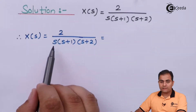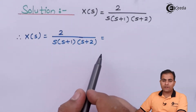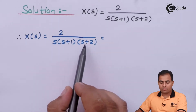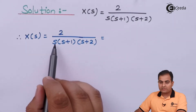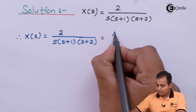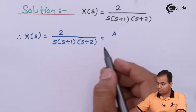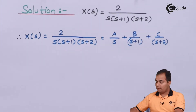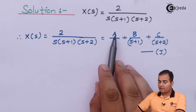The question is X of S equals 2 upon S into S plus 1 into S plus 2. We have three poles, which means while solving a partial fraction we have to take different types of variables. The number of different variables is totally equal to the number of poles. Here the number of poles is 3, which means variables also 3. We will place a single variable for simple poles.